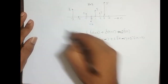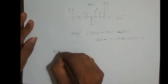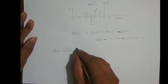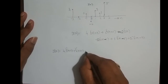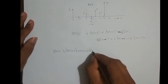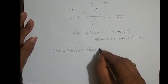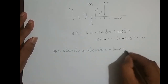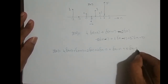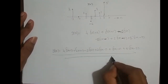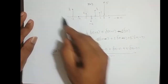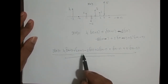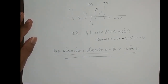So as a whole I can write it as: x of n equals 4 times delta of n plus 3, plus delta of n plus 1, minus 2 times delta of n, plus 2 times delta of n minus 1, plus delta of n minus 2, plus 5 times delta of n minus 3. So the discrete time signal is represented in terms of a combination of shifted and scaled versions of the delta function.